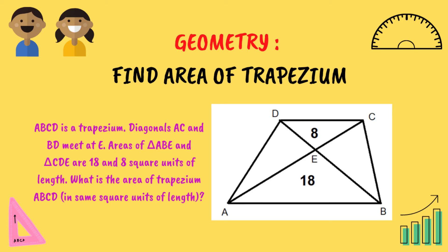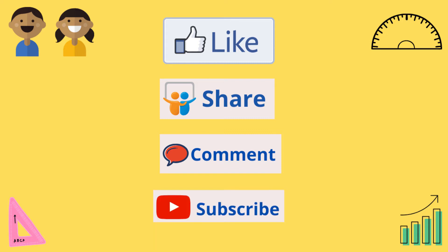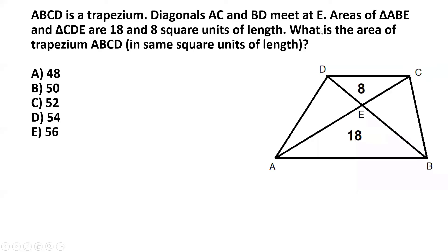Welcome to another video of interesting math problems on our channel Math Solutions For You. Please like, share, comment, and don't forget to subscribe. ABCD is a trapezium; diagonals AC and BD meet at E. The areas of triangle ABE and triangle CDE are 18 and 8 square units respectively. What is the area of trapezium ABCD?